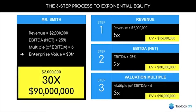So at an enterprise value of $3 million, he's 30x-ing that business by 5x-ing revenue, 2x-ing EBITDA, and 3x-ing the valuation multiple. Why is this? Because of what we call exponential equity — five times two times three equals 30x. And that 30x changes Mr. Smith's life.